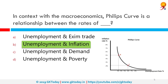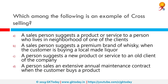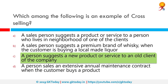The Phillips Curve is a single-equation economic model named after William Phillips describing an inverse relationship between rates of unemployment and corresponding rates of rises in wages within an economy. Which among the following is an example of cross-selling? The correct answer is when a person suggests a new product or service to an old client of the company. Cross-selling is the action or practice of selling an additional product or service to an existing customer.